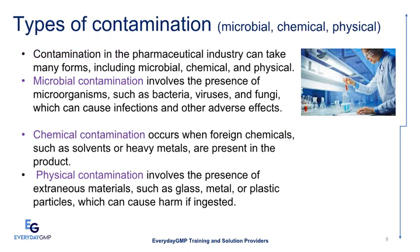Types of contamination: microbial, chemical, and physical. Contamination in the pharmaceutical industry can take many forms. Microbial contamination involves the presence of microorganisms, such as bacteria, viruses, and fungi, which can cause infections and other adverse effects. Chemical contamination occurs when foreign chemicals, such as solvents or heavy metals, are present in the product. Physical contamination involves the presence of extraneous materials, such as glass, metal, or plastic particles, which can cause harm if ingested.